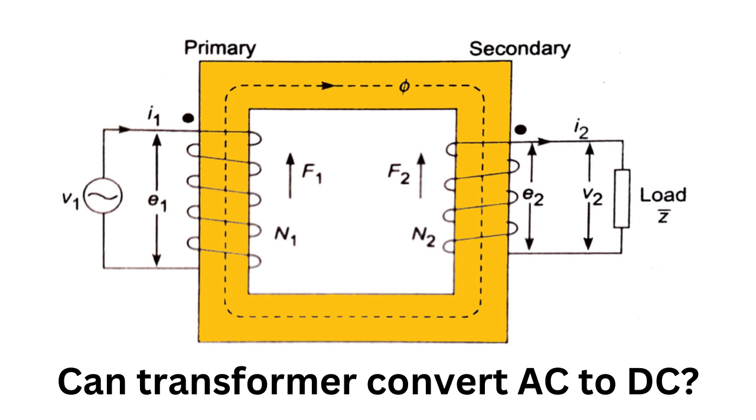A transformer is a device that is used to change the voltage level of an alternating current. It works by using electromagnetic induction to transfer energy between two or more coils of wire.